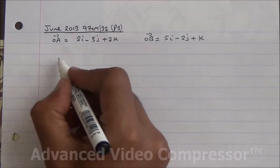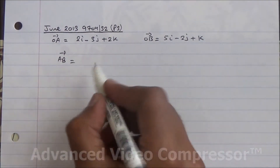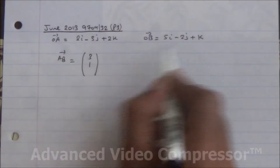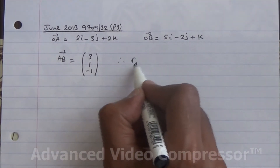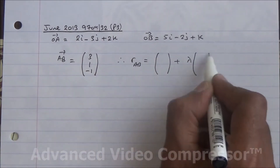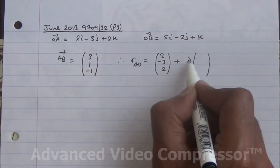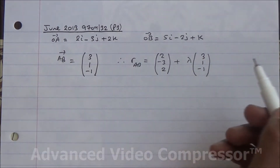For the first part, we have vector OA and vector OB. We need to find vector AB first, in order to find the equation of the line AB. Vector AB gives us 5 minus 2, which is 3; minus 2 minus minus 3, which is 1; and 1 minus 2, which is minus 1. Therefore, a vector equation of the line AB is given by OA = (2, -3, 2) plus lambda times the direction vector (3, 1, -1).